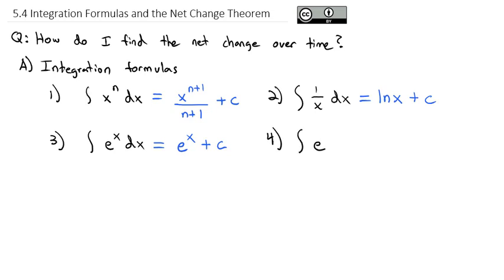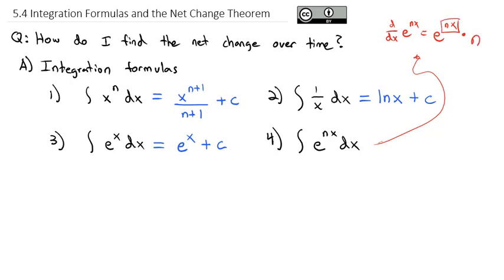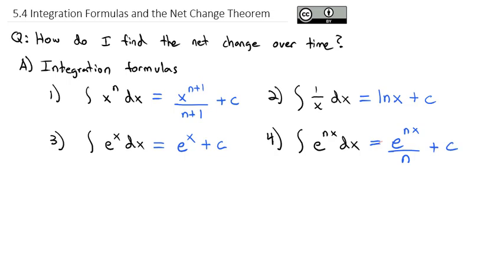A little variation on that — what would be the integral of e to the nx dx, where we've got some number multiplied by the x? When we were doing the derivative of e to the nx, we got e to the nx, and the chain rule said we had to multiply by the derivative of the inside, which was just n. So doing the integral working backwards, instead of multiplying by that n, we're going to divide by that n. We get e to the nx divided by n plus the constant.